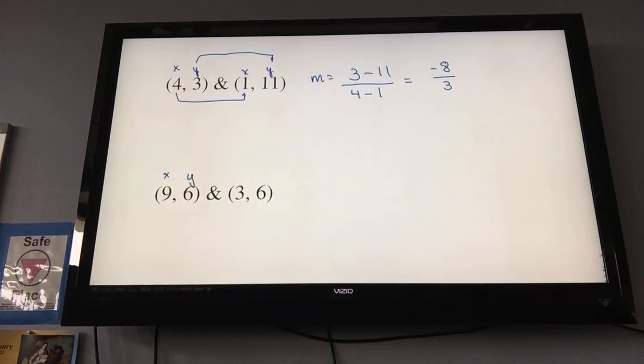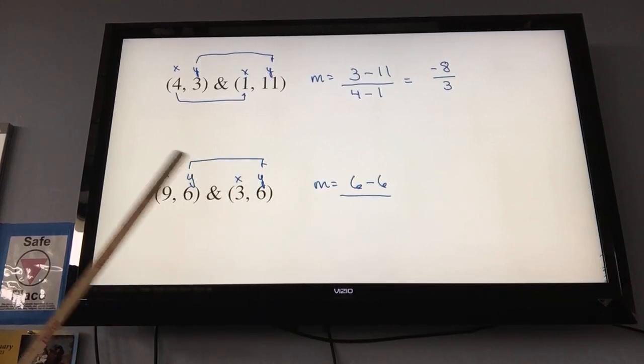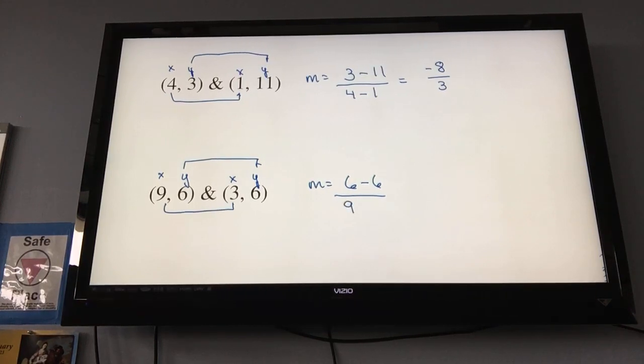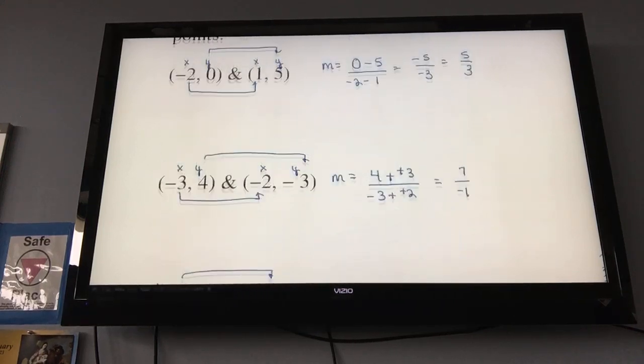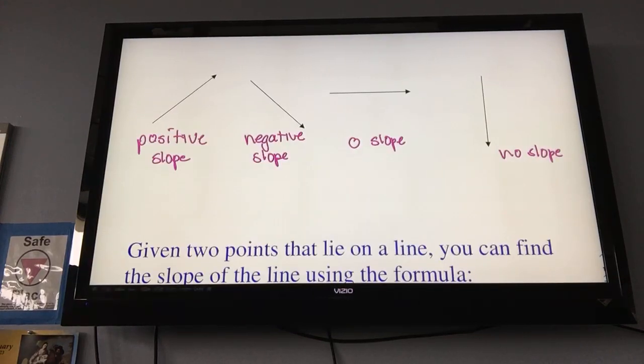And my last one. Again, two ordered pairs. It doesn't matter which one you start with. Just start with the same one for both x and y. So, y, which is 6, minus my other y, which is 6. So, y minus the other y, over x, which is 9, minus my other x, which is 3. So, I have 0 over 6. 6 minus 6 is 0. 9 minus 3 is 6. And if you punch that into your calculator, it gives you 0. So, 0 on the top is 0. That would be a horizontal line, a 0 slope.